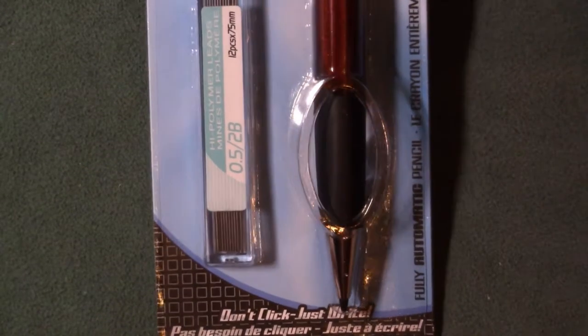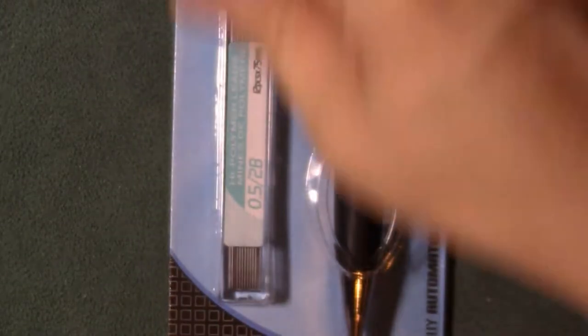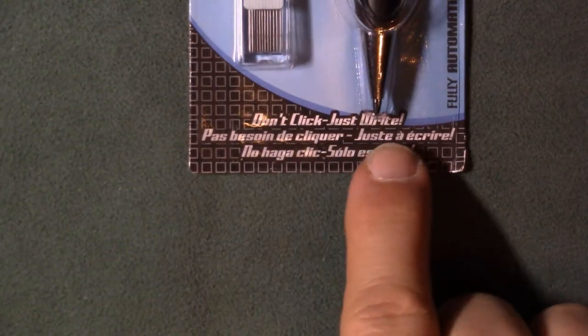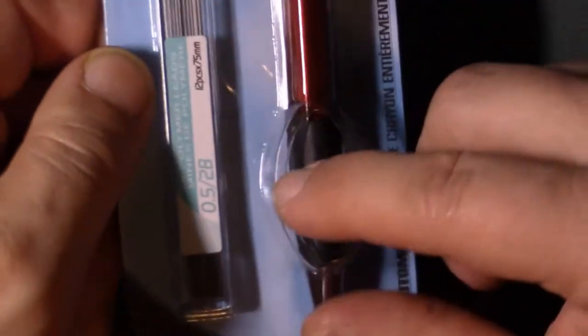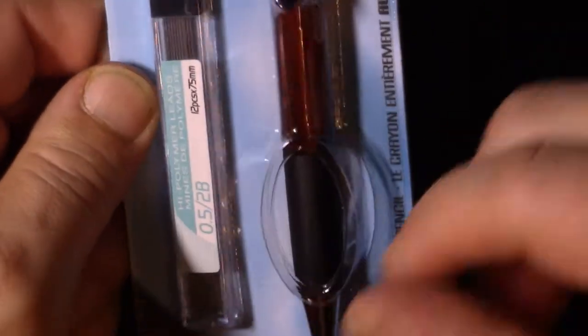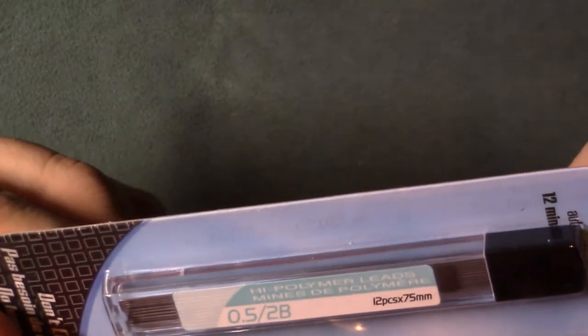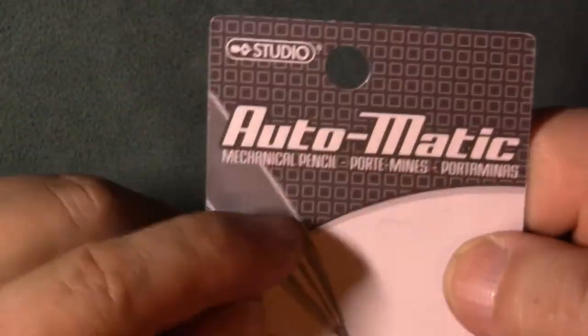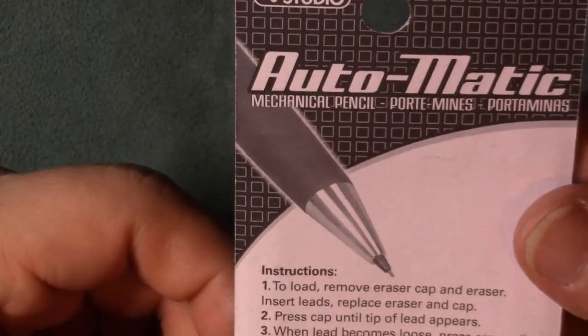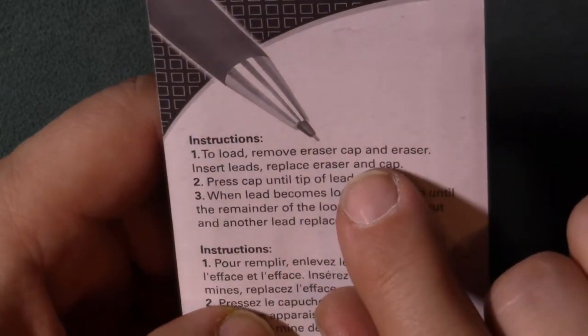Don't click, it says here, don't click just write. On the bottom here it says don't click just write, and of course you've got the little window here that shows the rubber grip. It says on the side here fully automatic pencil. On the back here you got the Studio automatic mechanical pencil instructions. One, to load, remove eraser cap and eraser.